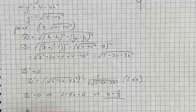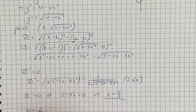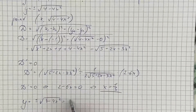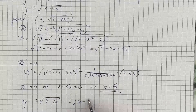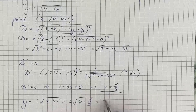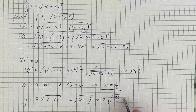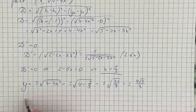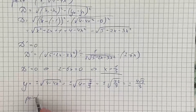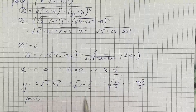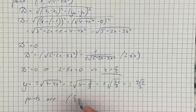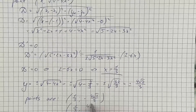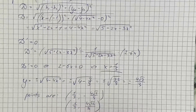Now substituting x equals 1 third into y equals positive or negative square root of 4 minus 4x squared, we get positive or negative square root of 4 minus 4 over 9, which equals positive or negative square root of 32 over 9, simplifying to positive or negative 4 square root of 2 over 3. So the points farthest from point negative 1, 0 are (1/3, negative 4 square root of 2 over 3) and (1/3, 4 square root of 2 over 3). That's the answer.